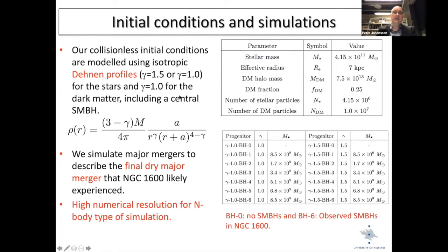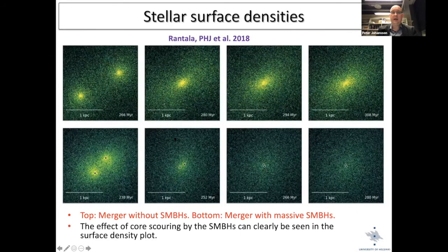We ran a collisionless merger simulation — no gas — of two massive elliptical galaxies set up with common density profiles, including dark matter, stars, and a central supermassive black hole. We simulated the final dry major merger that NGC 1600 likely experienced. We ran several simulations: one with no black holes, one with the observed combined black hole mass, and intermediate models with smaller black holes, with all other parameters identical.